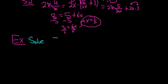Let's try this one: 5/(x+2) + 3/(x-2) = 12/(x²-4).